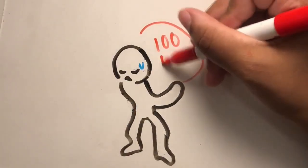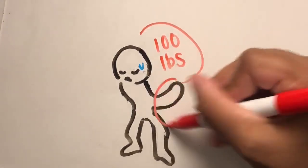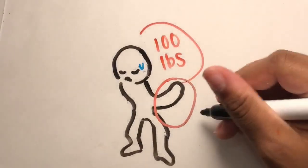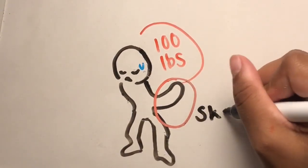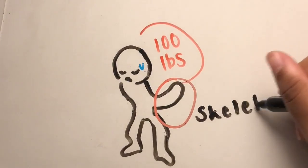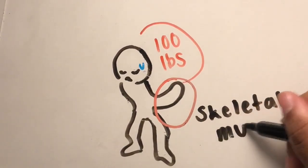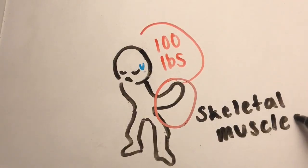Here we have Bob, and he's curling a 100-pound weight. In order for him to do this, he needs to contract and relax his muscles. We will be using the sliding filament theory to help explain why he can do this.